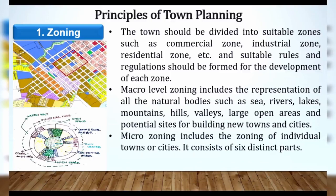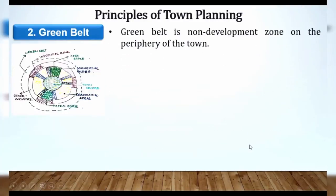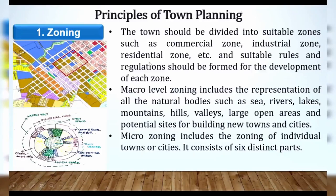Micro level mein, it consists of again six distinct parts. Ismein aayega zoning of individual towns or cities. Bas yaad rakho — ismein 6 distinct parts aate hain. As the name says, macro means large natural bodies — jaise ki sea, rivers, lakes, mountains. Yeh sab bade bade natural bodies hain. Toh woh area ko hum macro mein lenge. Phir micro mein, town ko aur sub-divide karenge — jaise ki town centers, small open areas used for recreation centers. Is tarah hum various zones mein divide karenge. That is the first principle — zoning — aur ismein chhe parts hote hain.